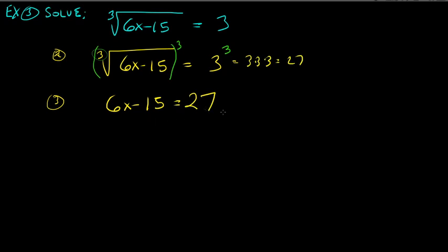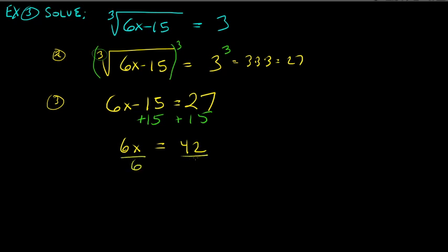Now solve the equation: add 15 to both sides to get 6x equals 42. Divide by 6 and we get x equals 7.